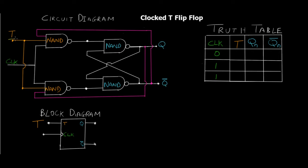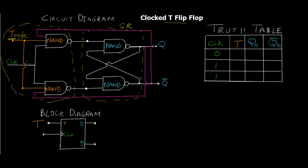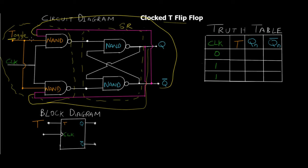We have only one input, known as the T input — the toggle input — and this input goes to both the upper and lower NAND gate. The first set of NAND gates are three-input NAND gates, and the pink inputs to both NAND gates are coming directly from the outputs. This is the SR latch part — the NAND gates in blue are the SR latch, and the arrangement behind that latch is the clocked T flip-flop. We also have a clock input to the first two NAND gates. Q goes to the lower NAND gate and Q-bar goes to the upper NAND gate.